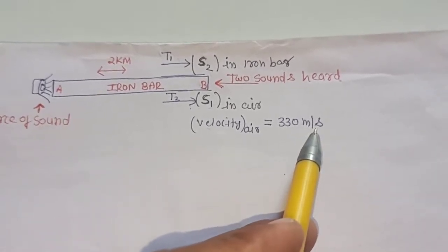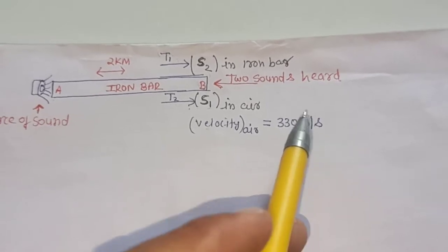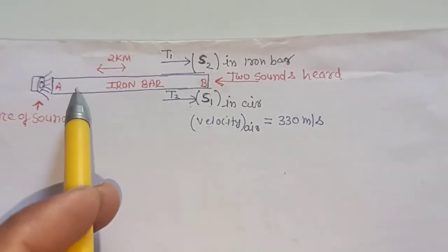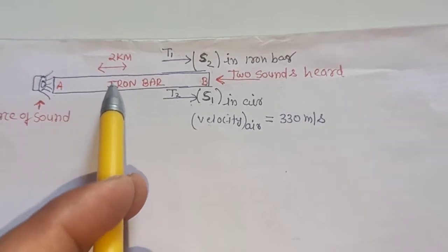Velocity is given that 330 meter per second. In the question, we have to find the speed of sound travel in the iron bar.